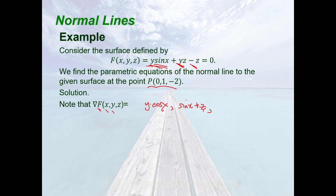Lastly, for the partial derivative of f with respect to z, we treat x and y as constants. The first term contributes 0, the second term yz gives y, and the last term −z gives −1. Hence, the gradient of f equals the vector (y·cos(x), sin(x) + z, y − 1).